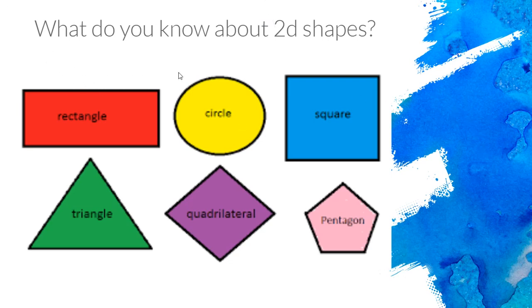And in our picture we have a rectangle, a circle, a square, triangle. This says quadrilateral, but that's another name for a rhombus and a pentagon.